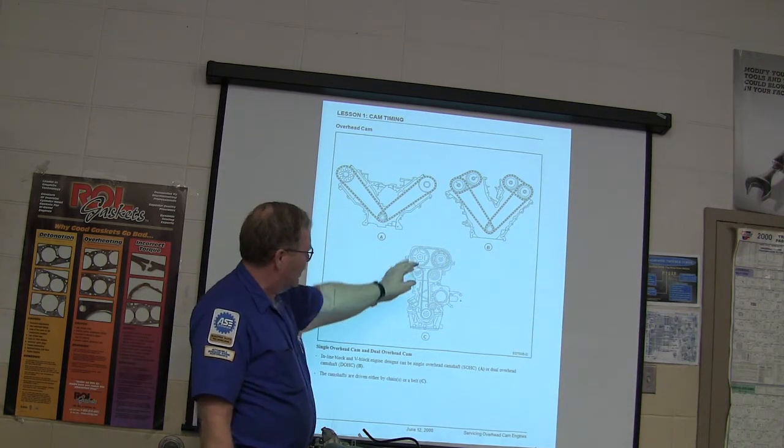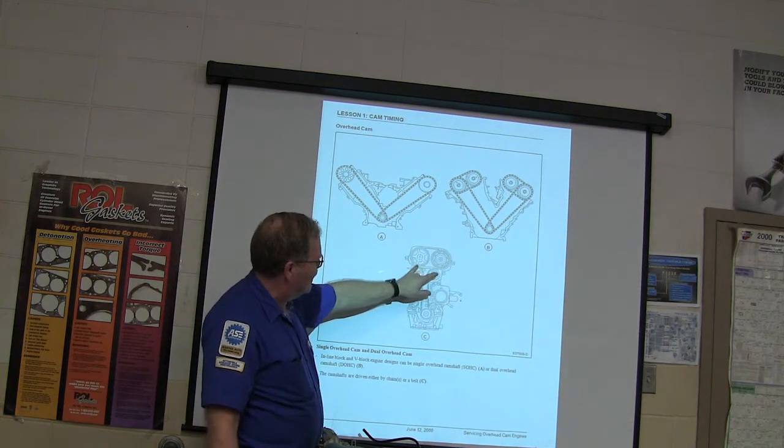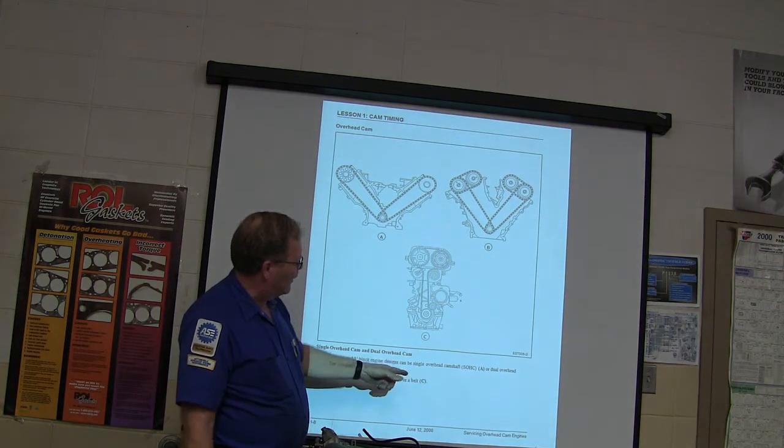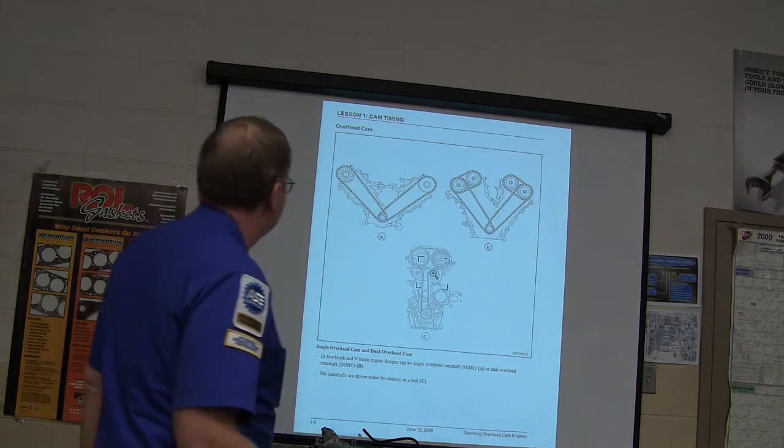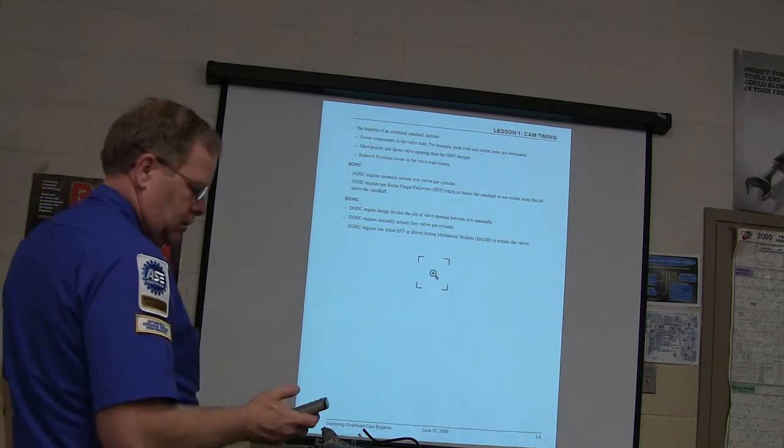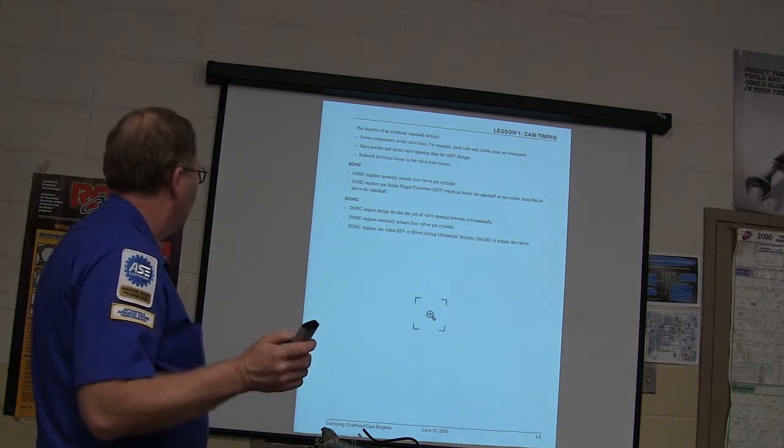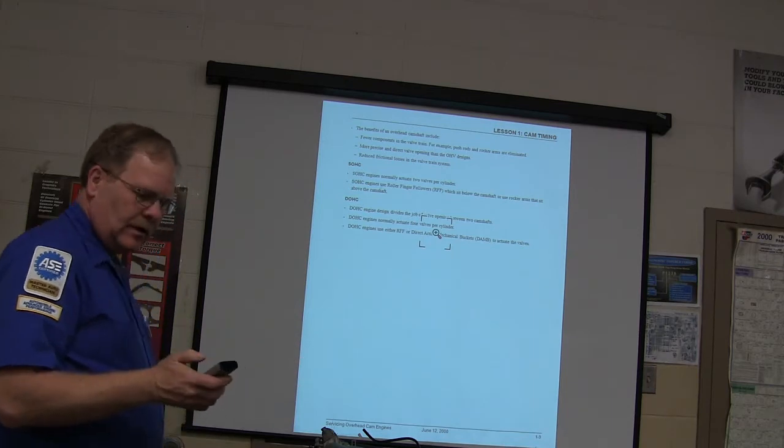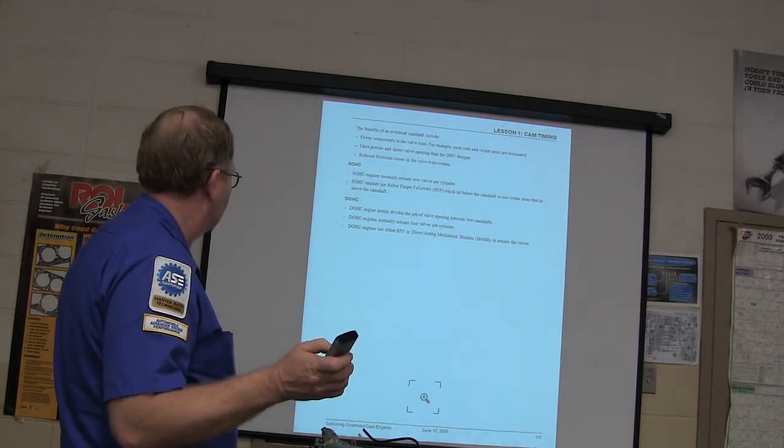This one right here is a little timing belt equipped overhead cam engine. And it's got two timing belts up here. And then it's got the little tensioner right there and the little idler right there. Sometimes the water pump is part of that. They want me to zoom in. I guess I'm just going to put up with that being a banner. I don't know how you get rid of it.